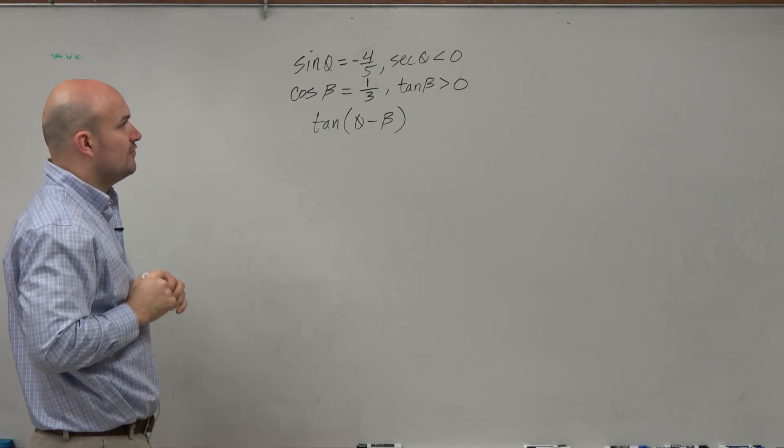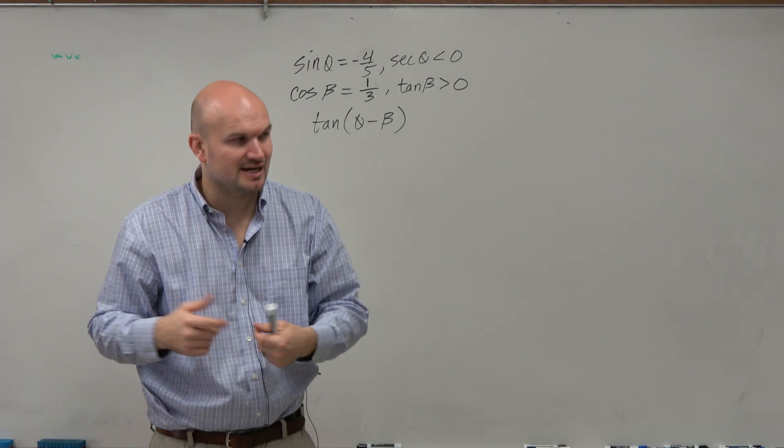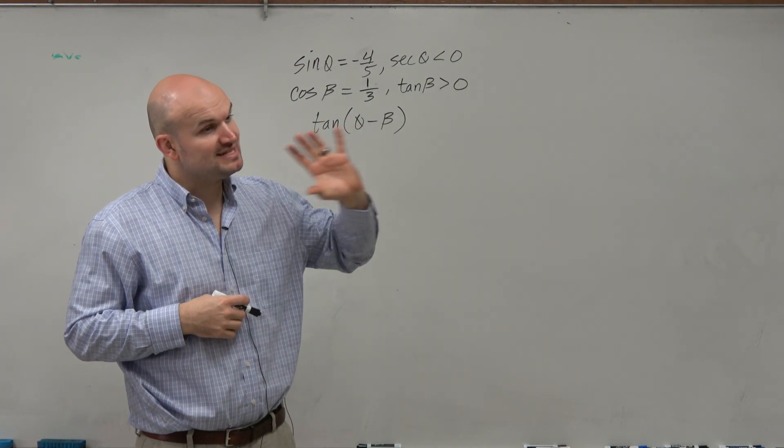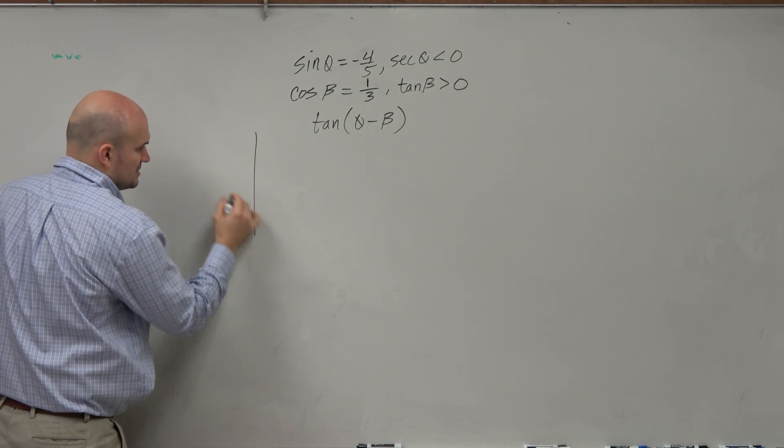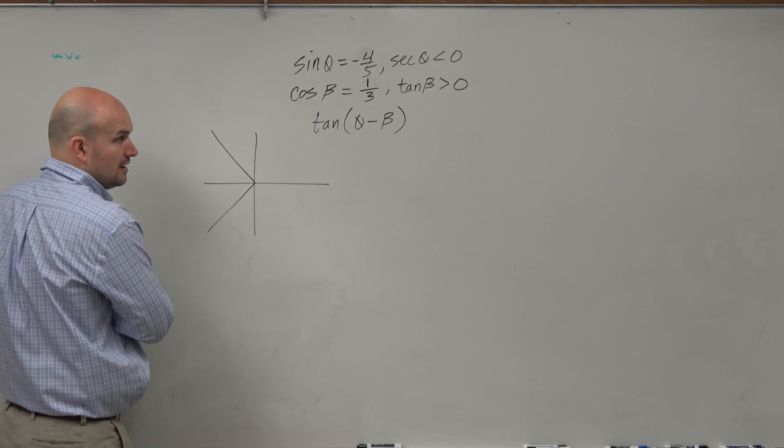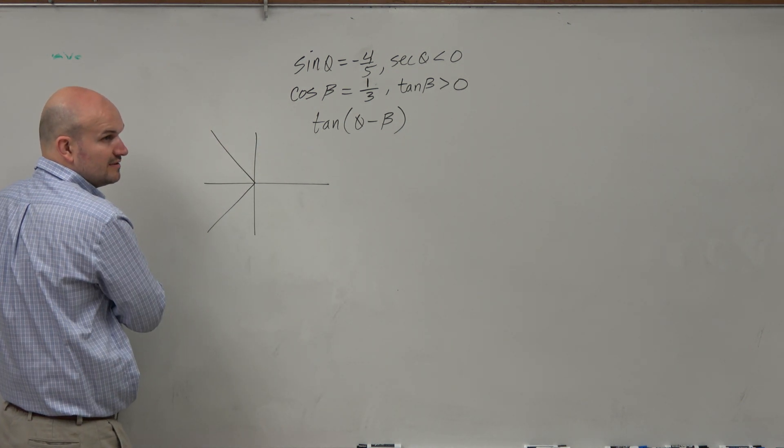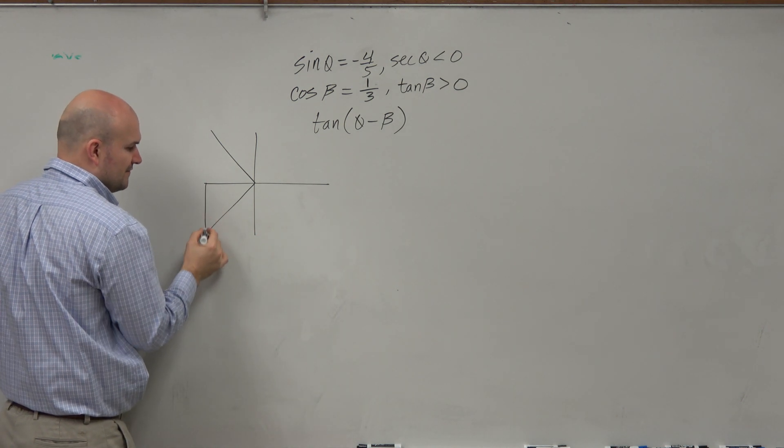So we have sine of theta is negative 4/5, where secant is less than 0. Hopefully this is a little bit more familiar to you guys. We know if secant is negative, then it has to be in the second and the fourth quadrant. However, if sine is negative, then that has to be in the third and the fourth quadrant. So the only triangle that fits is down here.